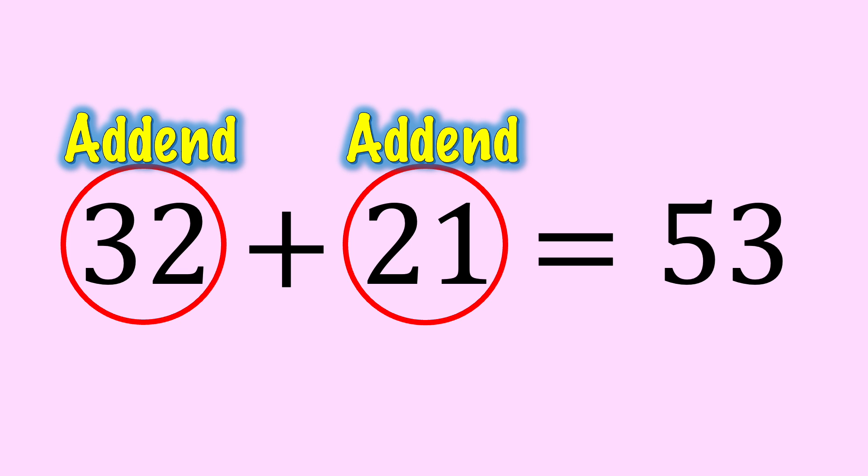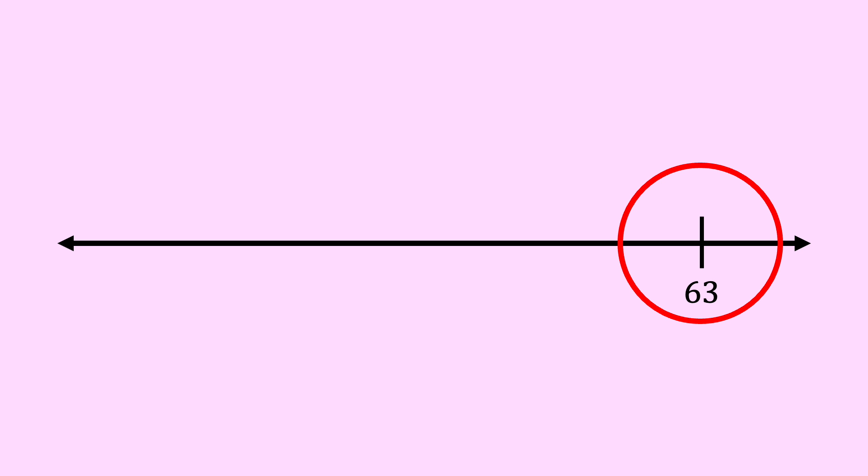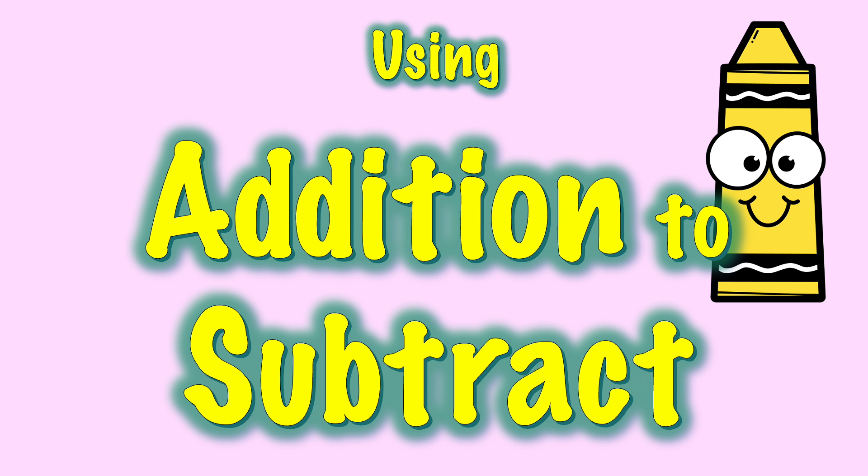When we subtract, we start on the right of the open number line and jump back to the left. When we use addition to subtract, there are a few more steps.